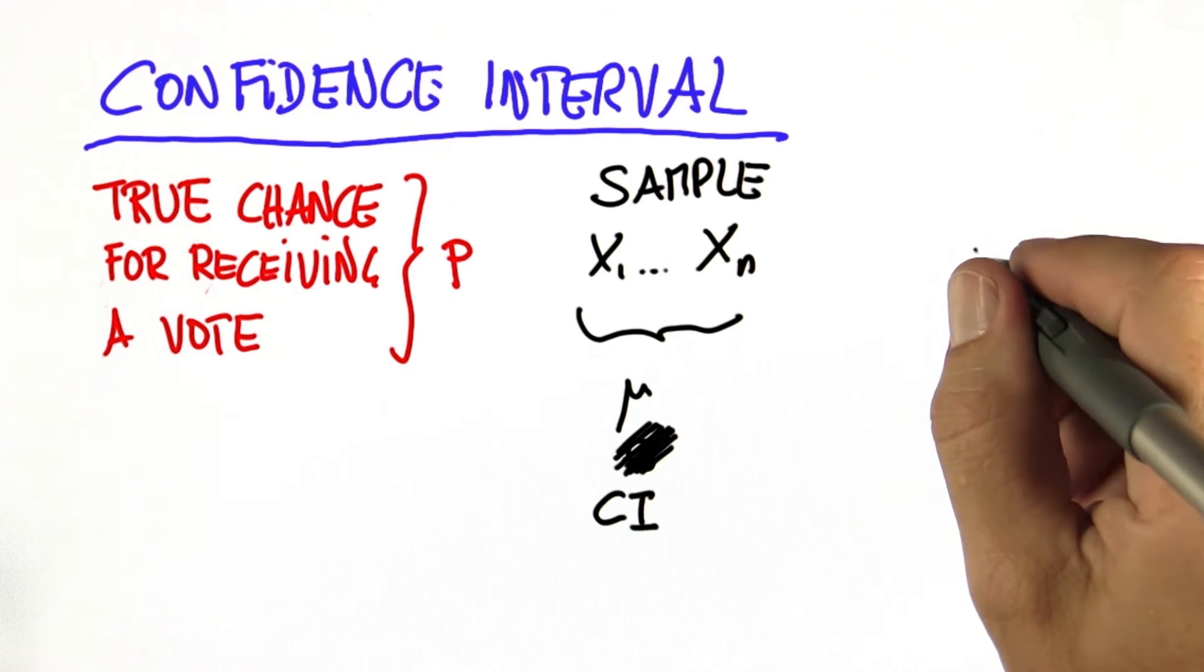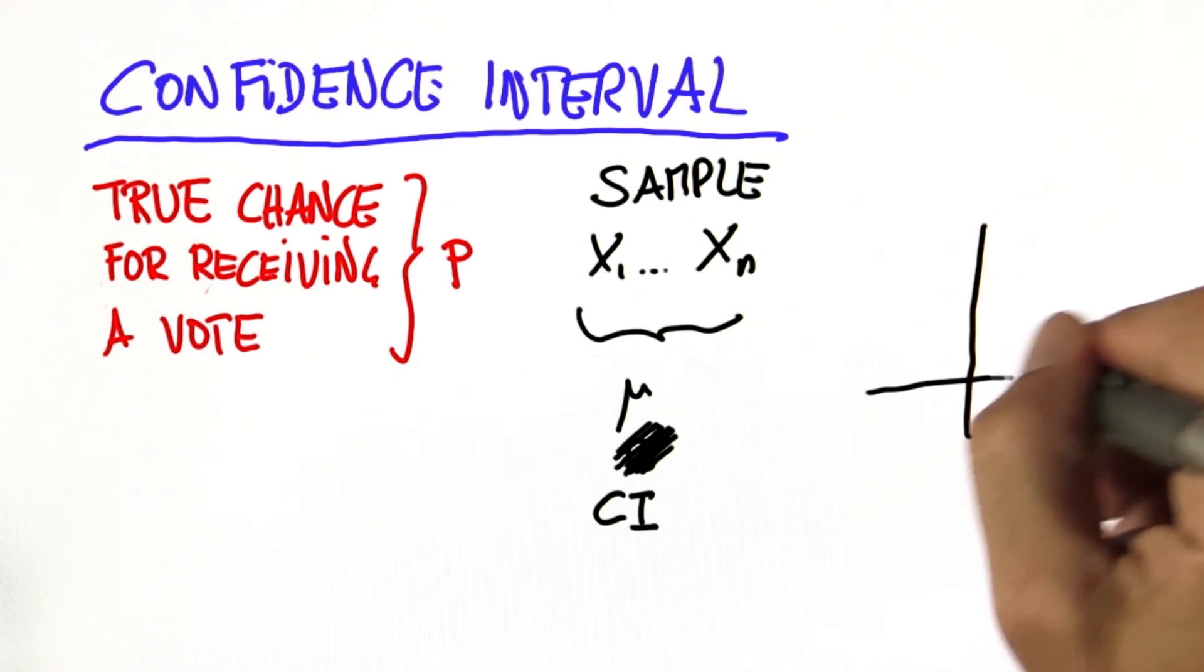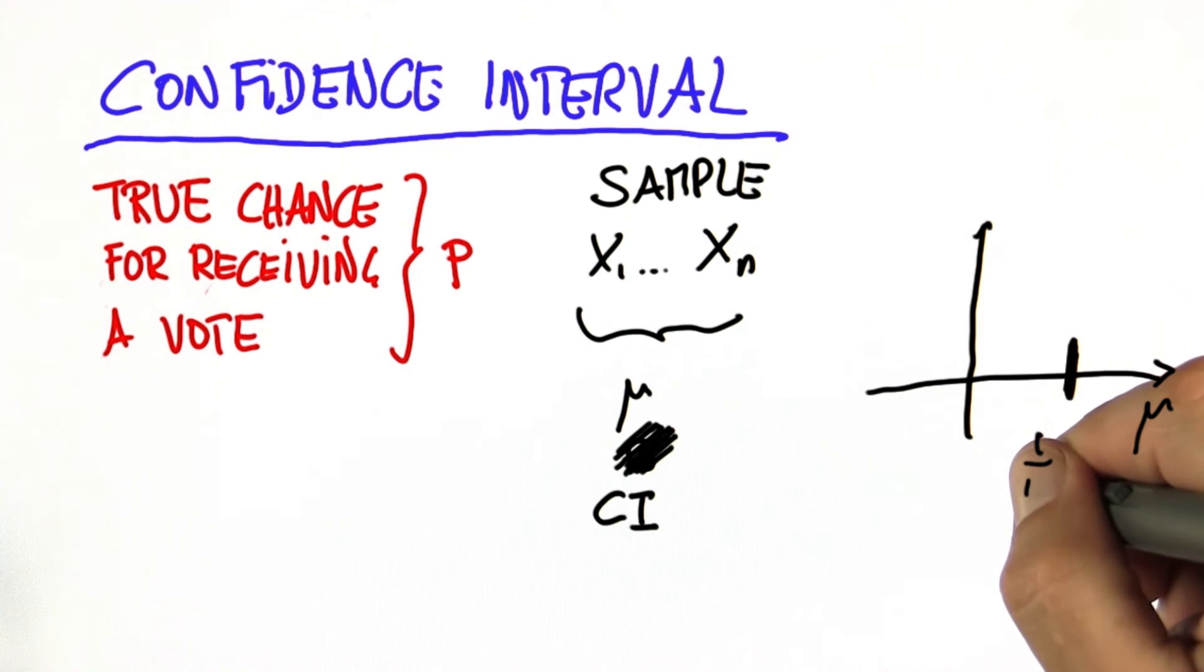What this says is, based on the outcome, we believe for the parameter mu, this is the best guess we can get, which is usually the maximum likelihood estimate.